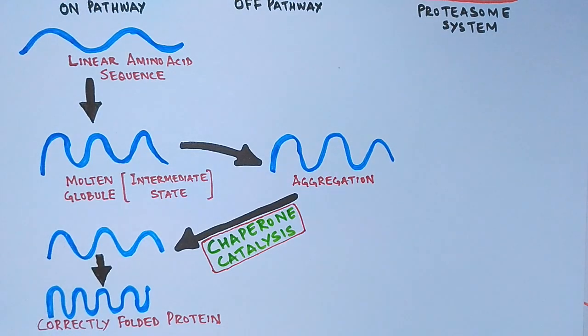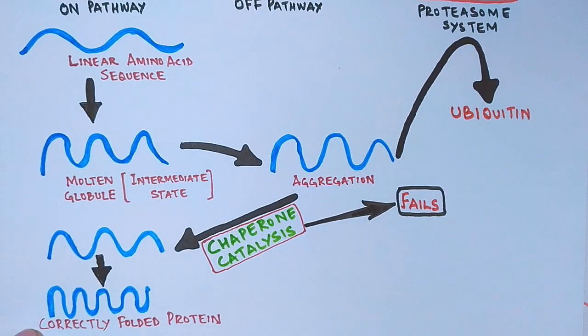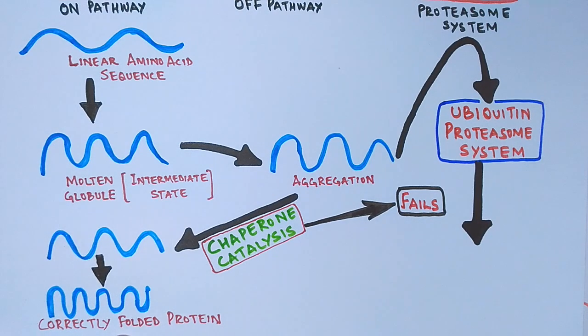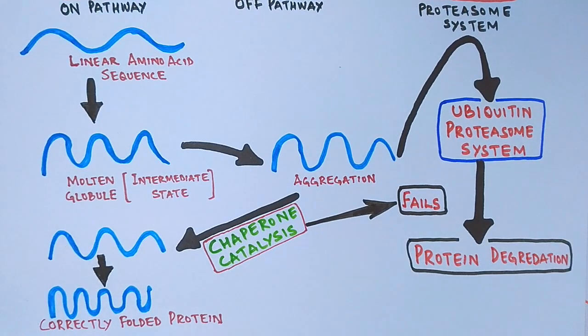But sometimes chaperone catalysis fails. Then at that time the protein is marked by ubiquitin via ubiquitin proteasome system. And this system, this ubiquitin mediated pathway leads to protein degradation. And in this way the misfolded protein, the damaged protein is eliminated.